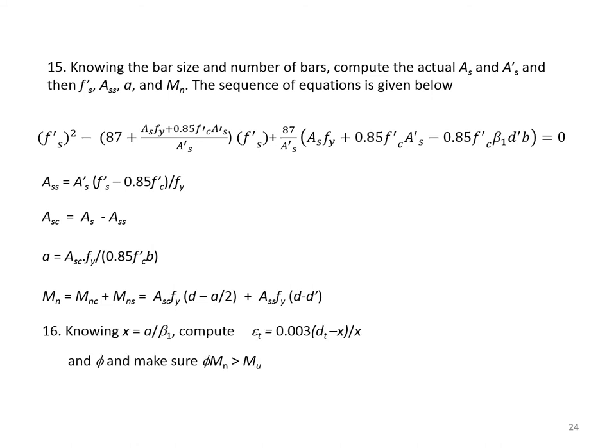Step 16: knowing x equal to a divided by beta_1, compute epsilon_t as 0.003 times (d_t minus x) divided by x, then find phi and make sure phi × M_n is larger than M_u. When phi × M_n is larger than M_u, the design is satisfactory.